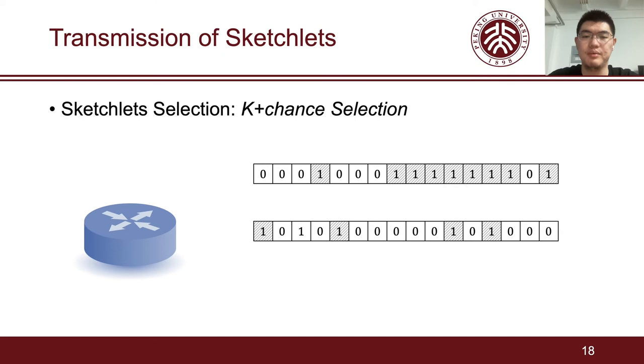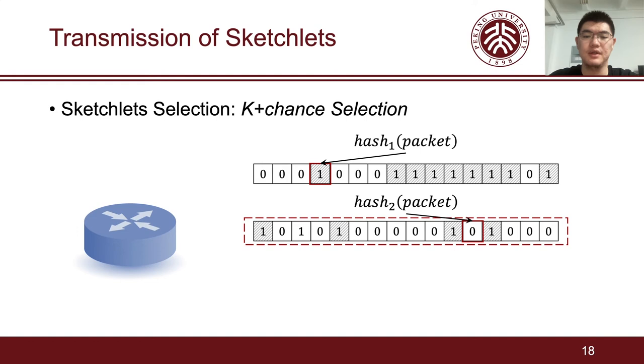We design an efficient algorithm to select the sketchlet to be transmitted, named k-more-chance selection. The k-more-chance selection uses multiple bit arrays. Each array consists of n bits and is associated with a hash function, where each bit corresponds to a sketchlet. Whenever we need to select one of the n sketchlets, we access these arrays one by one. For each array, we randomly choose a bit. If it is 0, we choose the corresponding sketchlet to send and set this bit to 1. Otherwise, we access the next array. If we do not find a 0 bit after accessing all the arrays, we randomly choose one sketchlet to transmit. This method can reduce the overhead of recording the sketchlet ID from 32 bits to 2 bits.